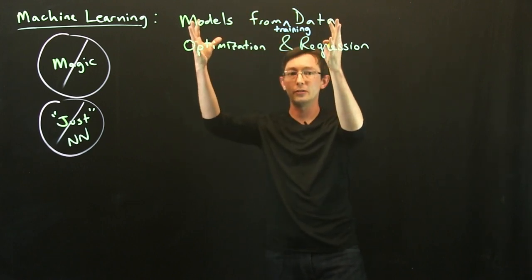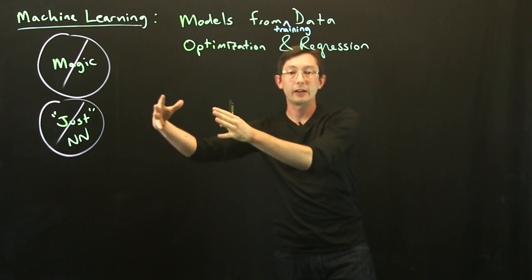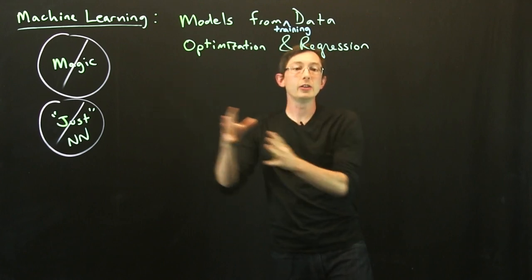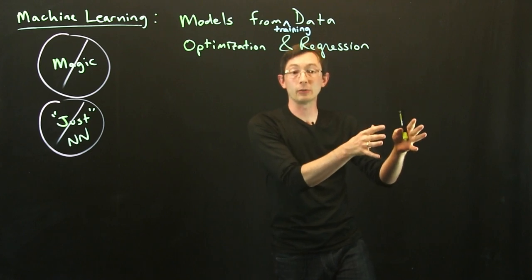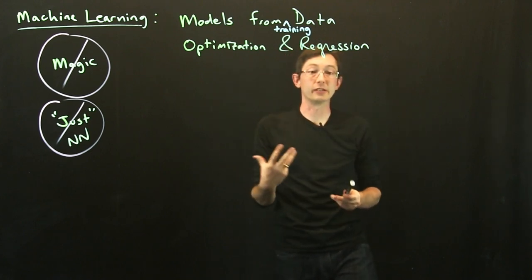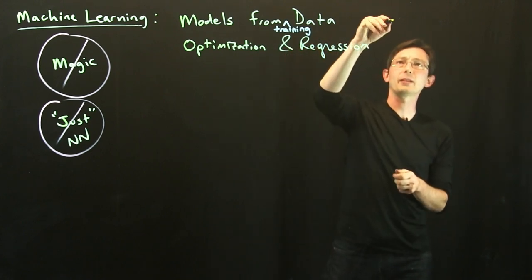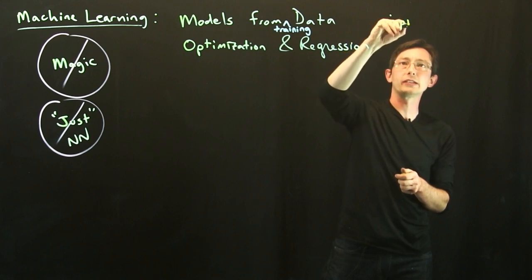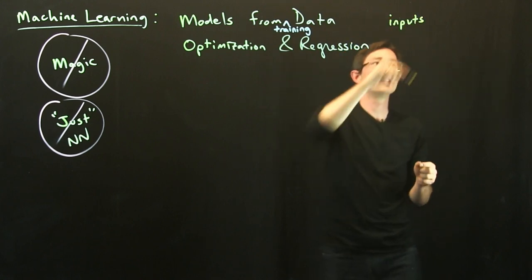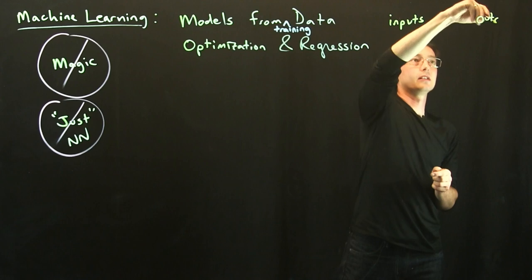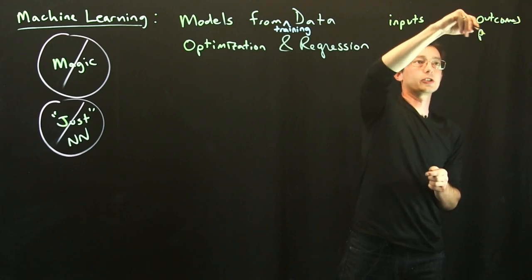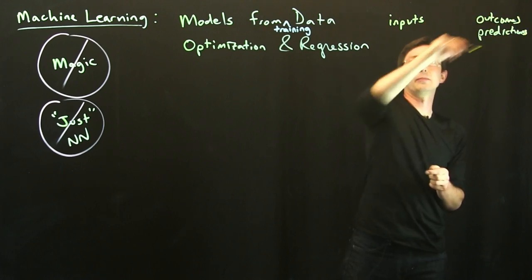So you train this model, maybe it takes a long time and a lot of resources to collect the data and train the model. Then you hope when you deploy that model in the real world, the predictions are still useful. You have some inputs, some input variables. You have some outcomes or predictions that you want to make based on those variables.